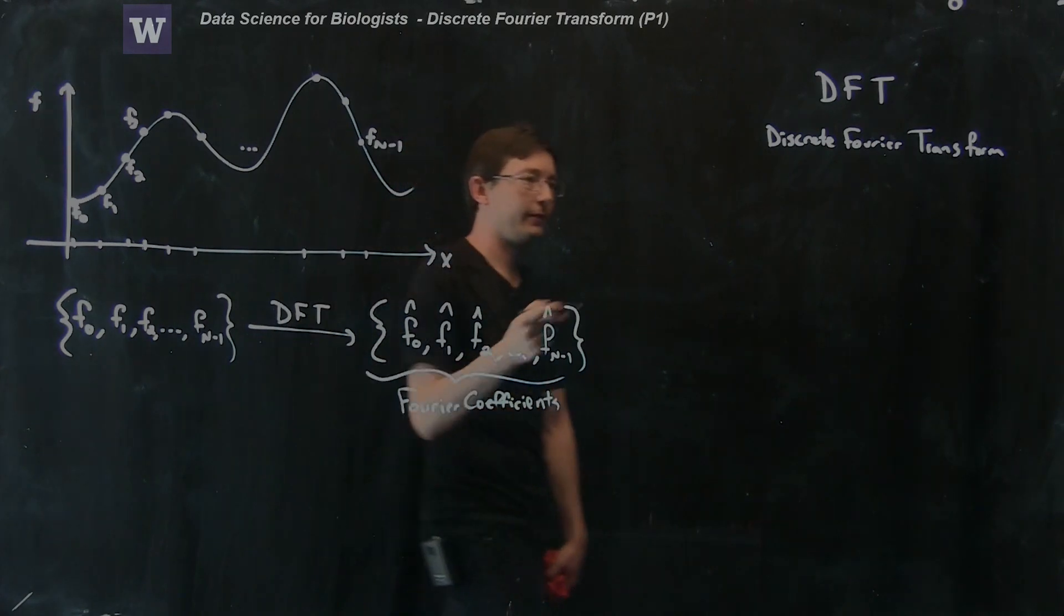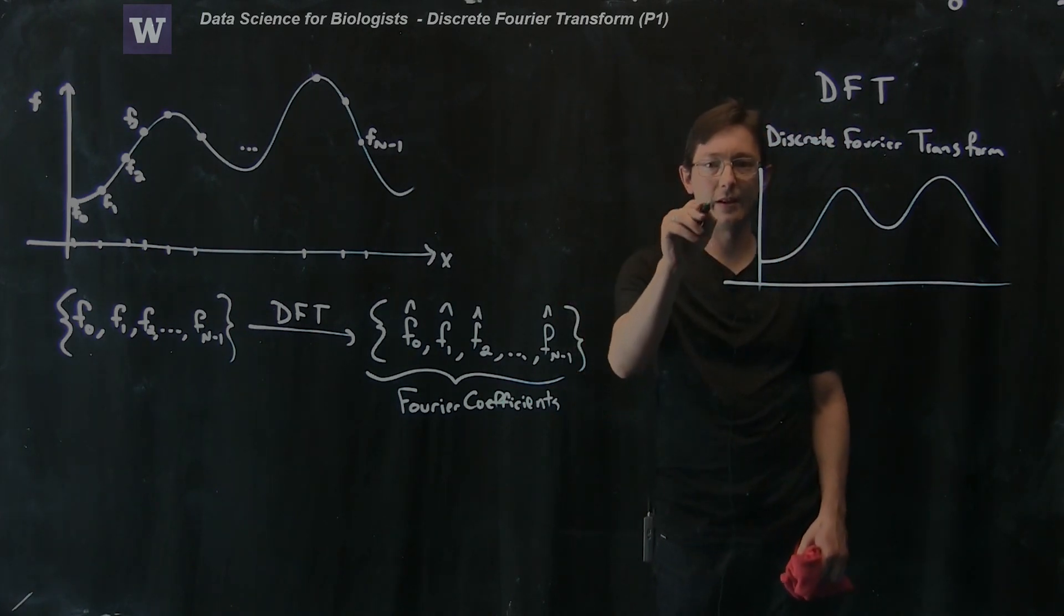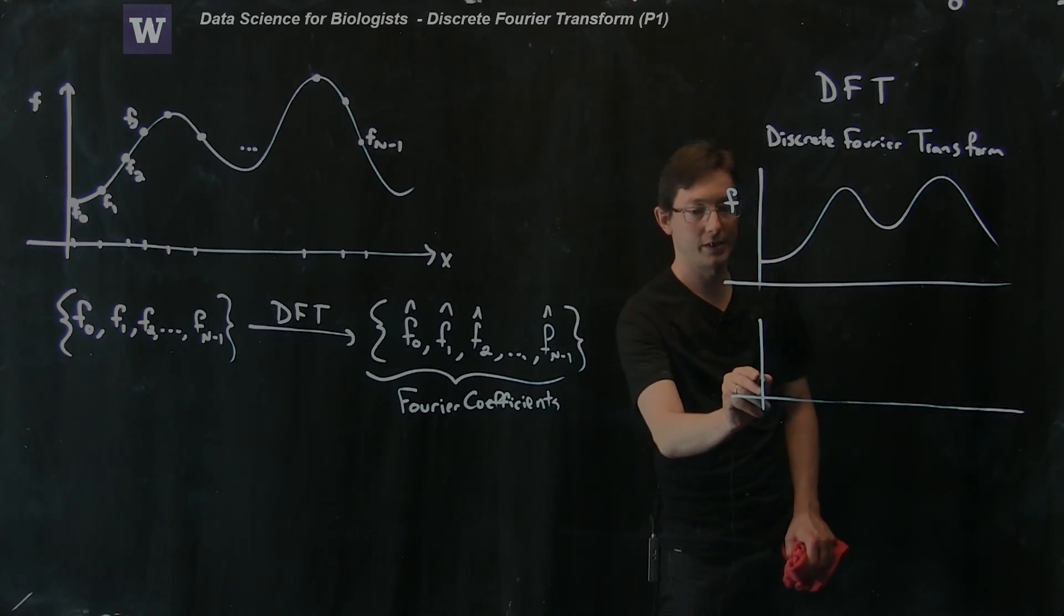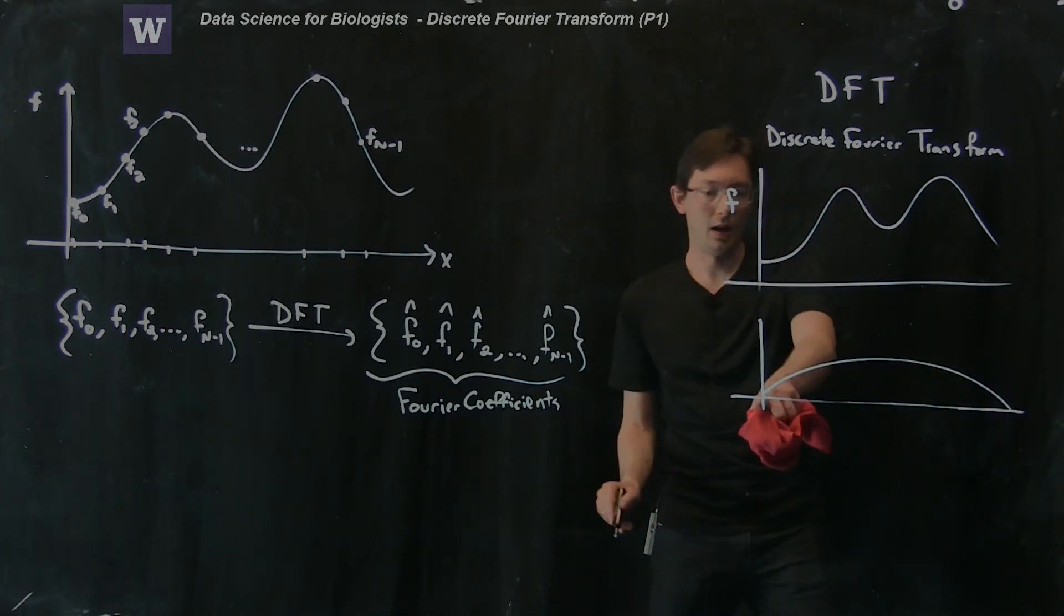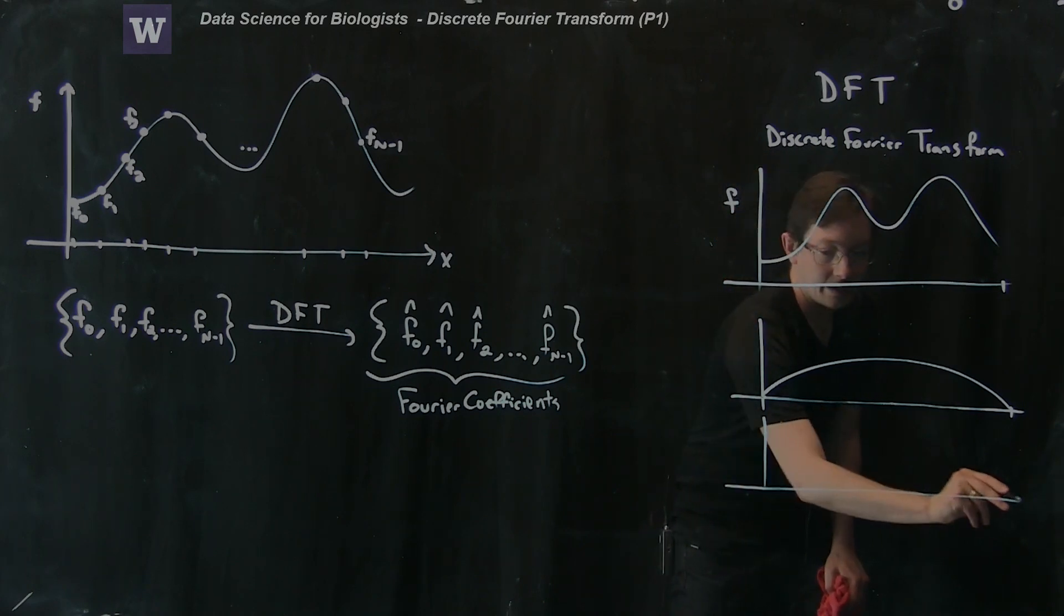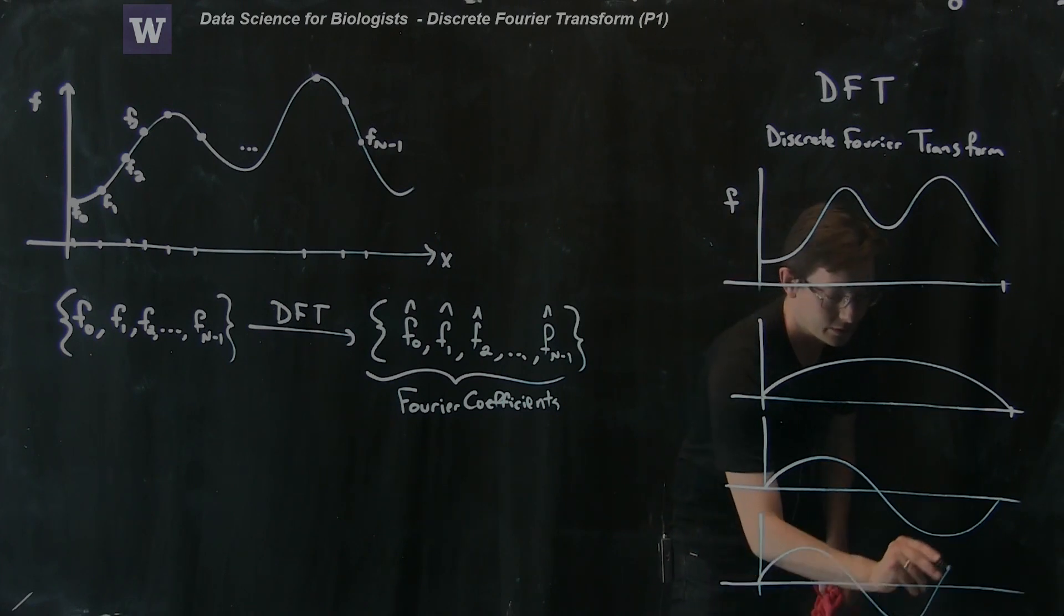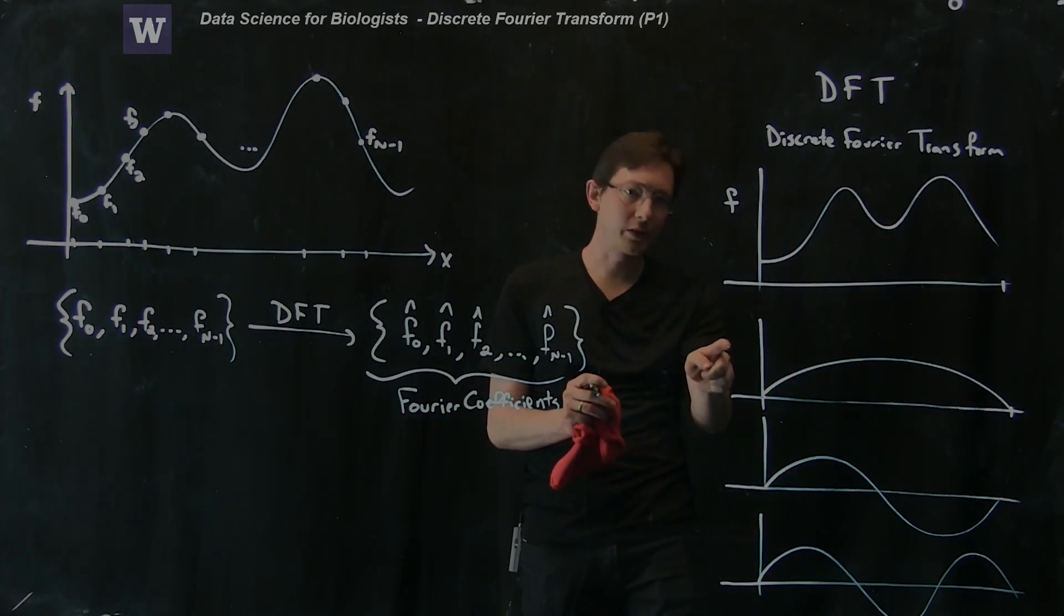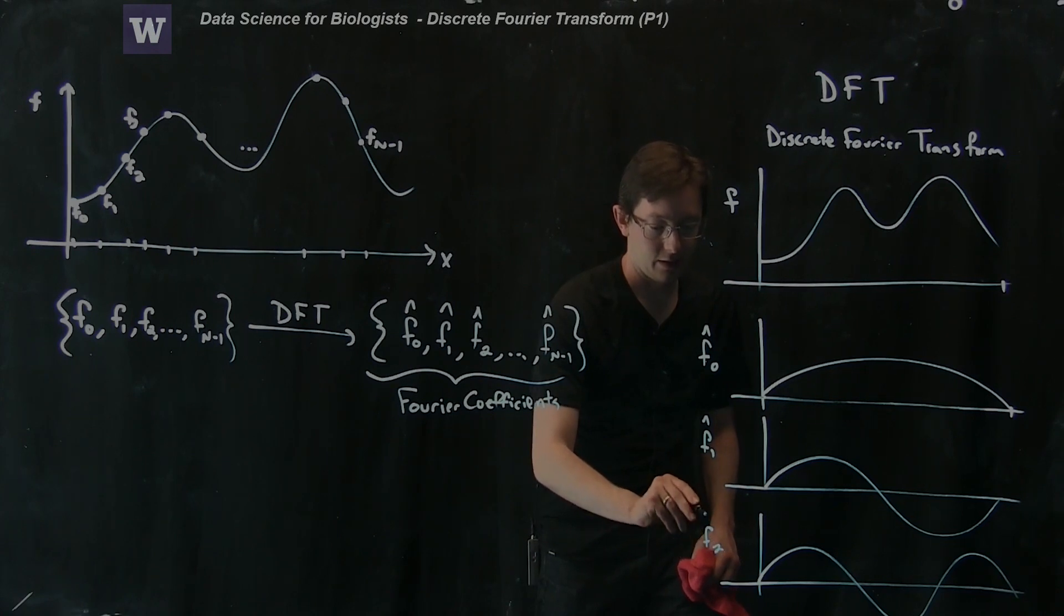So the entire idea here is that I can take my function, and I can write this as a sum of a bunch of sine waves. So I have a first sine wave, which is just sine and cosine waves. So my first one might just be a big, low frequency sine wave over the entire domain. And then I'm going to add another higher frequency sine wave. And I'm just going to keep adding these up, higher and higher frequency sine waves, until I can add these sine waves up and rebuild this functional shape.